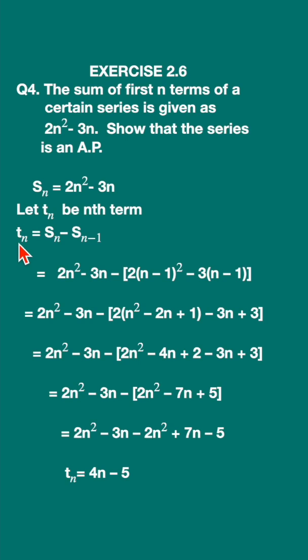Let us write down Tn is equal to Sn, that is the sum of the first n terms, minus the sum of the first n minus 1 term. Is it not? Because after n minus 1 you will get the nth term.